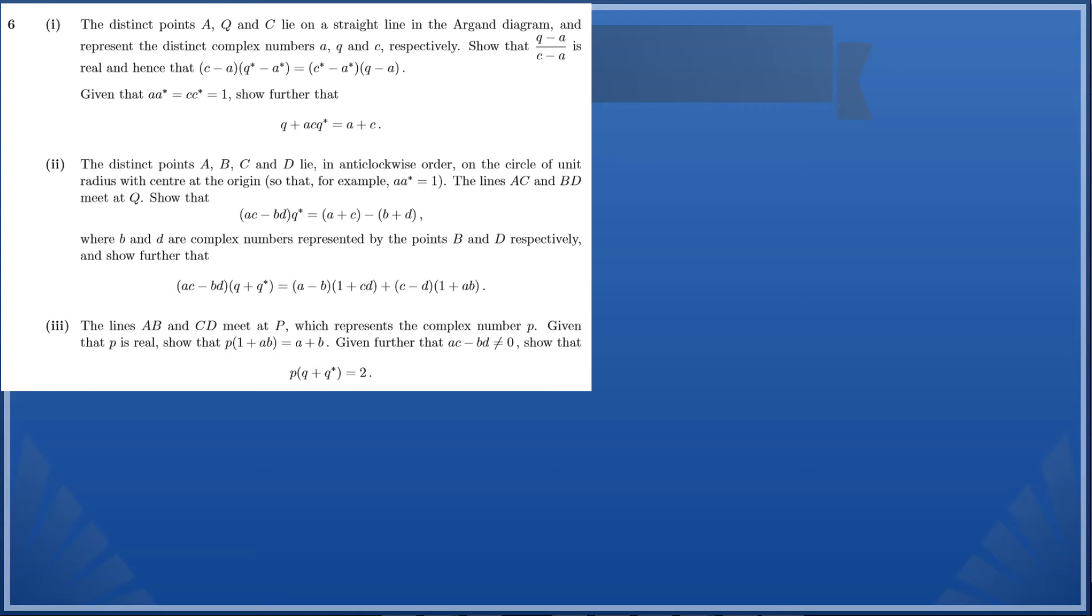First of all, we've got part 1. It says the distinct points A, Q, and C lie on a straight line in the Argand diagram and represent the distinct complex numbers a, q, c respectively. We need to show that (q-a)/(c-a) is real and hence (c-a)(q*-a*) = (c*-a*)(q-a). And then we also need to prove that q + acq* = a + c.